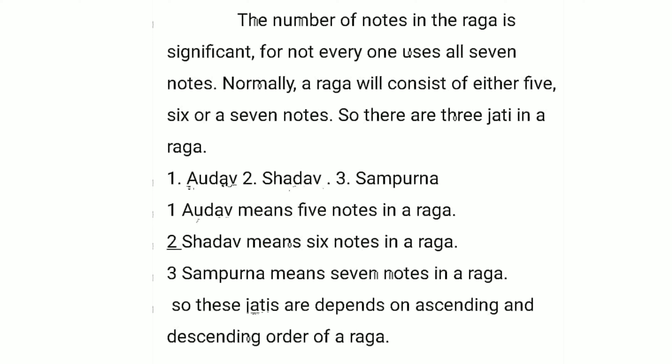Normally, a rag will consist of either five, six, or seven notes. So there are three jatis in a rag: Audav means five notes in a rag, Shadav means six notes in a rag, and Sampurna means seven notes in a rag.